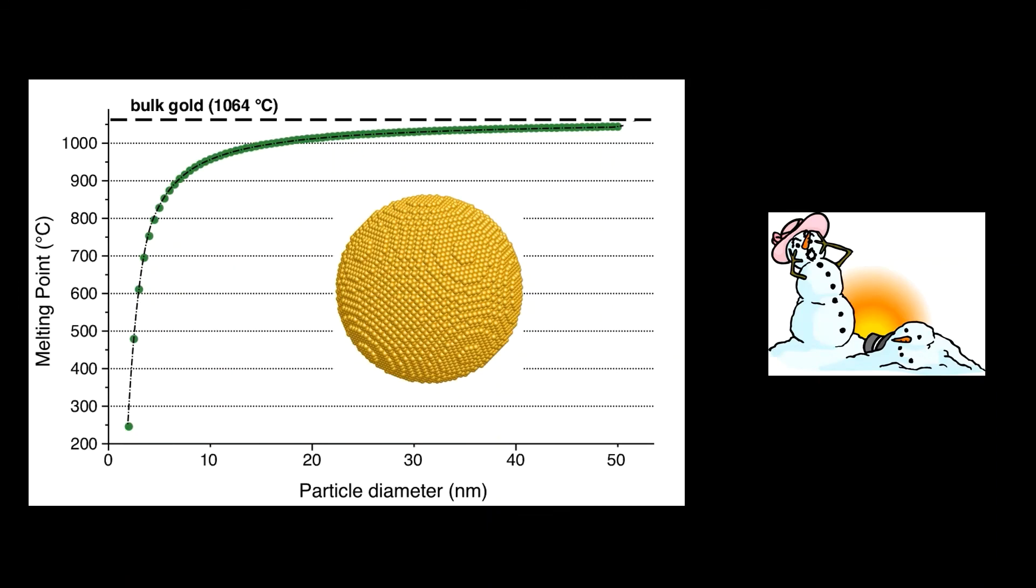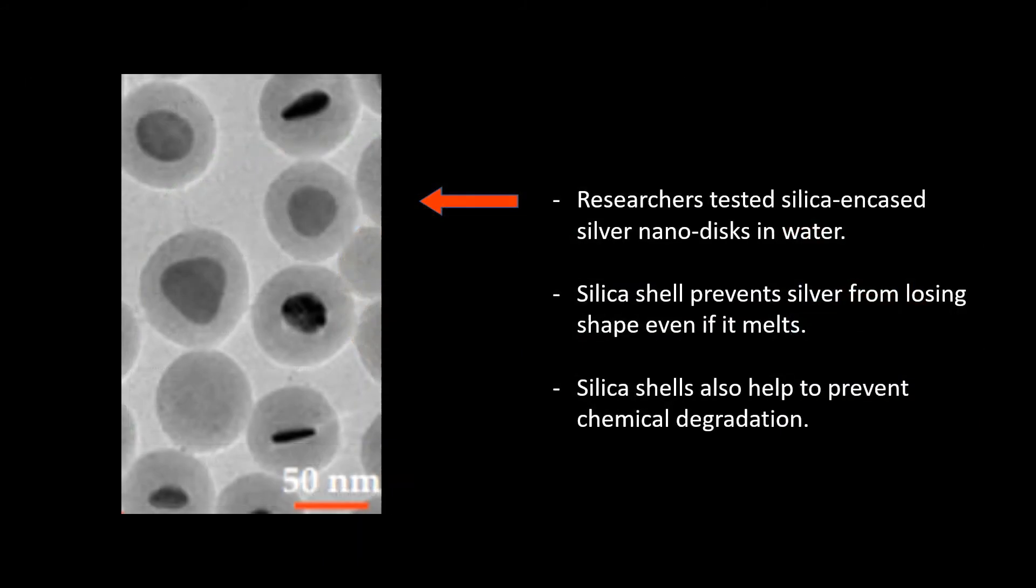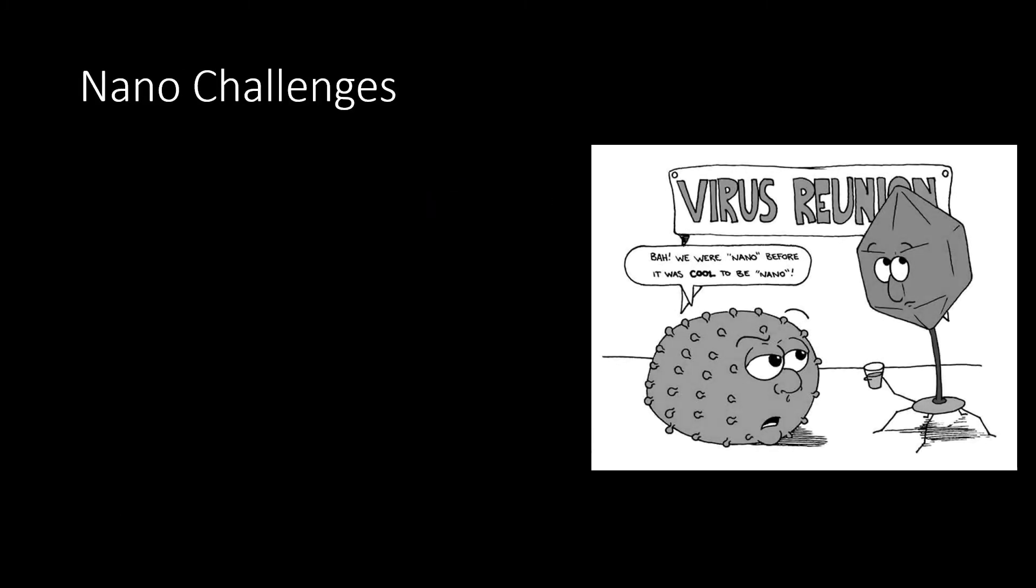Although, the researchers did take note that a nanoparticle's melting temperature decreases as the size decreases. Therefore, nanoparticles would normally melt and aggregate in a device such as this. However, these researchers had the genius idea of casing the nanoparticles in oxide shells to prevent aggregation even if the particle melts.